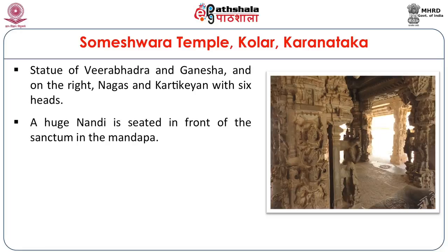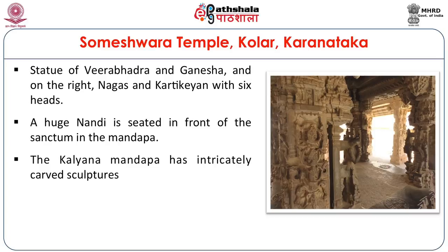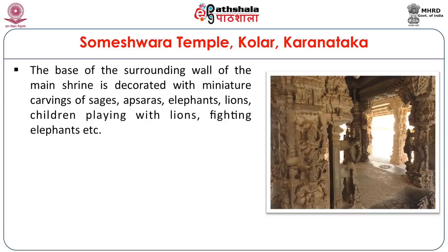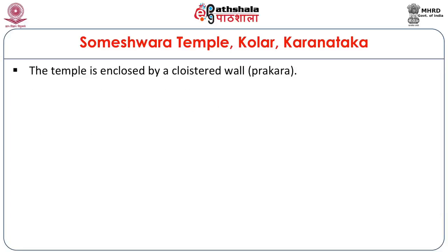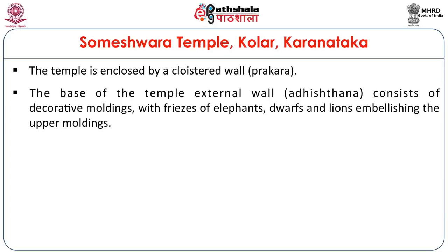A huge Nandi is seated in front of the sanctum of the Mandapa. Monolithic Nandis were another architectural feature of the Vijayanagara Empire, which it had picked up from the earlier Kakatiya dynasty. The Kalyan Mandap has intricately carved sculptures. The base of the surrounding wall of the main shrine is decorated with miniature carvings of sages, apsaras, elephants, lions, children playing, fighting elephants, etc. The temple is enclosed by a cloistered wall — that is a prakara — whose Adi Sthana base consists of decorative mouldings with friezes of elephants, dwarves and lions embellishing the upper moulding.